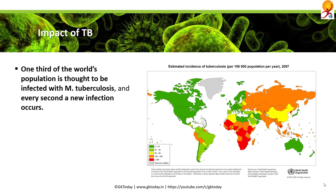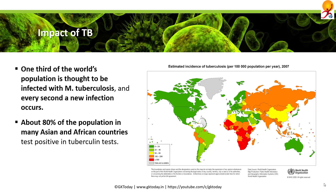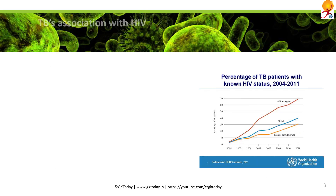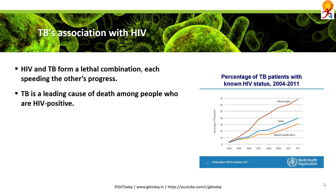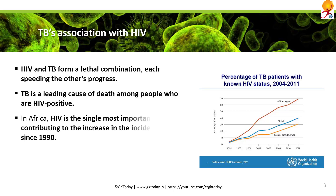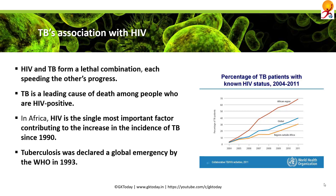One third of the world's population is thought to be infected with M. tuberculosis, and every second a new infection occurs. About 80 percent of the population in many Asian and African countries test positive in tuberculosis tests, and the highest number of deaths from TB is in the African region. HIV and TB form a lethal combination, each spreading the other's progress. TB is a leading cause of death among people infected with HIV, and HIV has been the single most important factor contributing to the increase in TB incidence since 1990. Tuberculosis was declared a global emergency by the World Health Organization in 1993.